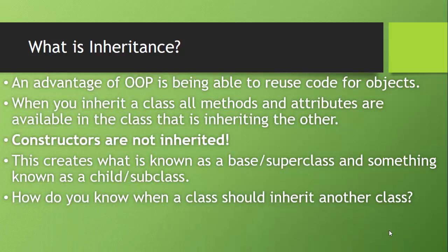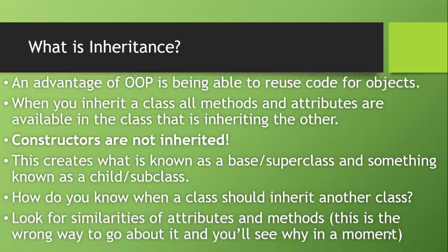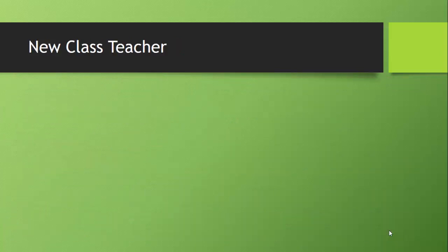So how do you know when a class should inherit another class? One of the things I hear commonly is, oh, just look for similarities of attributes and methods. That is the wrong way to go about it, and you'll see why in a moment. So let's use that common advice — looking for similarities of attributes and methods — and see why it doesn't work.